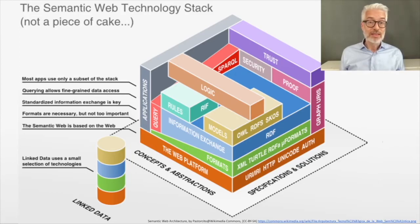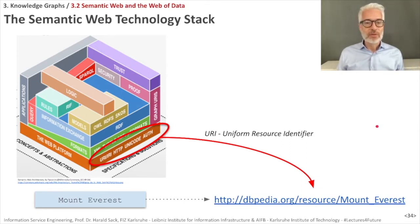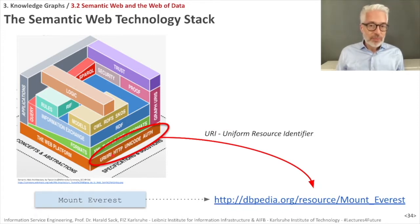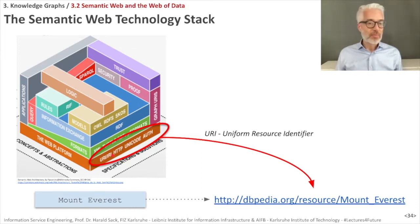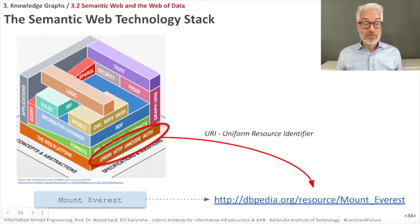We start at the very basic level — the web platform. Looking at the web platform, here are the common web technologies of interest. For example, if I want to identify something like Mount Everest, I use a URI — a Uniform Resource Identifier. Since I want to make statements not only about web documents but about things in the real world, I need to identify them somewhere in the web, and this is done via a URI — a web address for a real thing.